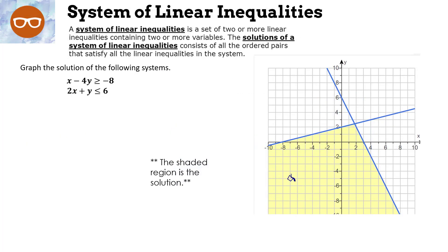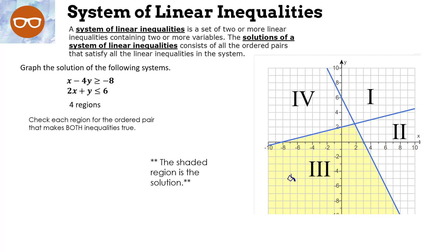A system of linear inequalities is a set of two or more linear inequalities containing two or more variables. The solution consists of all ordered pairs that satisfy all the inequalities in the system. Basically, we graph both inequalities and find which region is true for both at the same time. We have four regions to check, and we pick a test point — (0, 0) is perfect here.